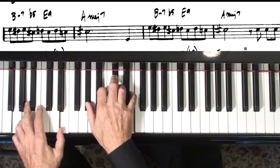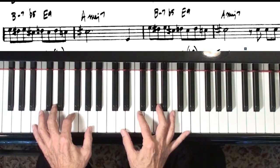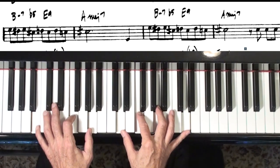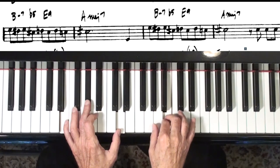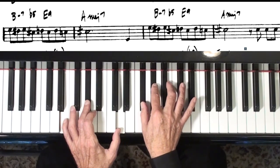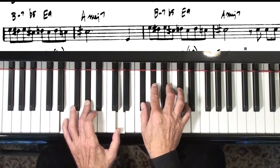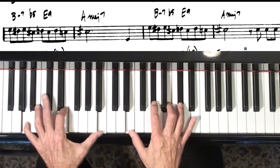Now the bridge gets kind of adventurous here. We start off with what sounds like a minor 2-5-1 because you've got the minor 7-flat-5. But it's not an altered E. It's just a regular E dominant with some unaltered intervals. And then we get into A major again.